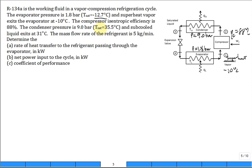The corresponding saturation temperature is 35.5 degrees C for that pressure of 9 bar. Now it exits sub-cooled liquid, not saturated, sub-cooled liquid at 31 degrees C. So if it exited as saturated liquid, it would come out 35.5 degrees C, but it comes out 31.